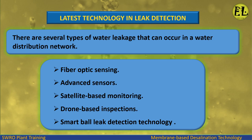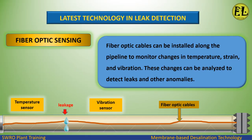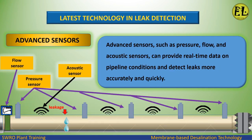Latest Technology in Leak Detection includes fiber optic sensing, advanced sensors, satellite-based monitoring, drone-based inspections, and smart ball leak detection technology. Fiber optic cables can be installed along the pipeline to monitor changes in temperature, strain, and vibration; these changes can be analyzed to detect leaks and other anomalies. Advanced sensors such as pressure, flow, and acoustic sensors can provide real-time data on pipeline conditions and detect leaks more accurately and quickly.